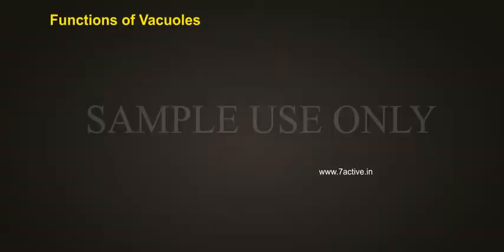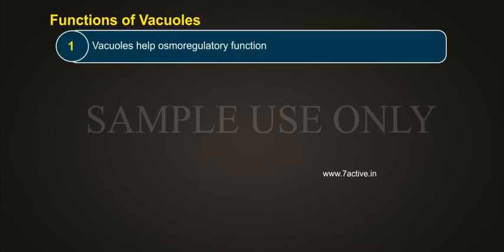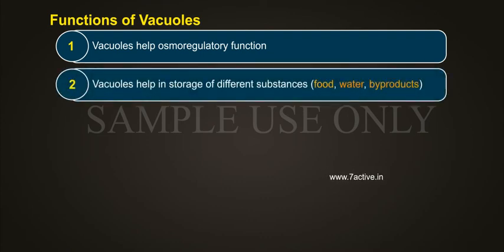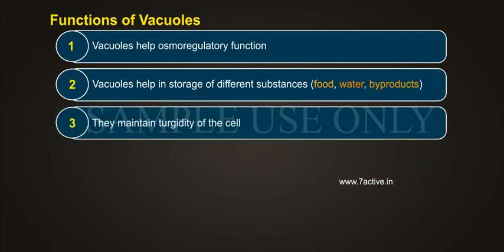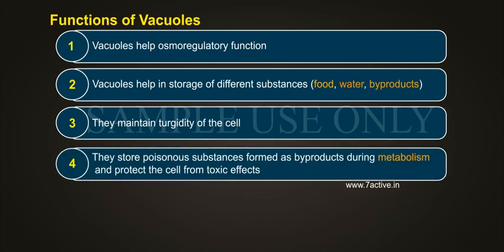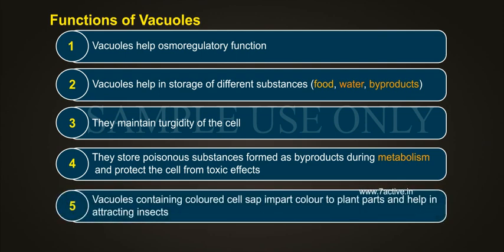Functions of Vacuoles: 1. Vacuoles help in osmoregulatory function. 2. Vacuoles help in storage of different substances — food, water, and by-products. 3. They maintain the turgidity of the cell. 4. They store poisonous substances formed as by-products during metabolism and protect the cell from toxic effects. 5. Vacuoles containing colored cell sap impart color to plant parts and help in attracting insects.